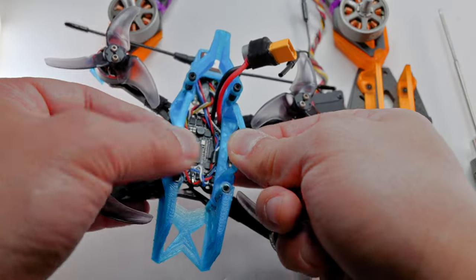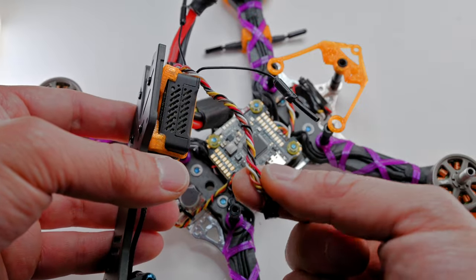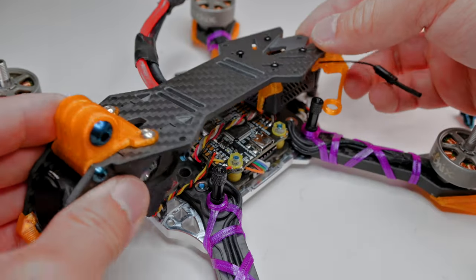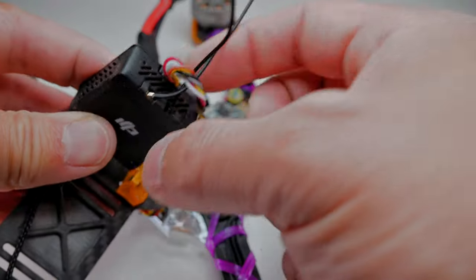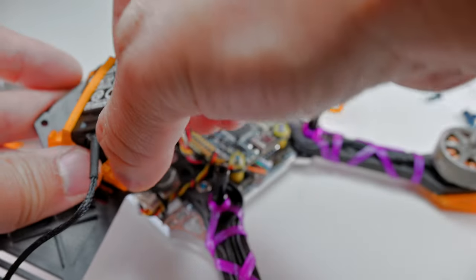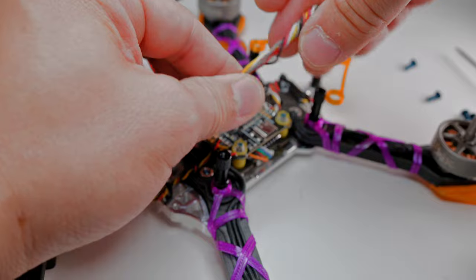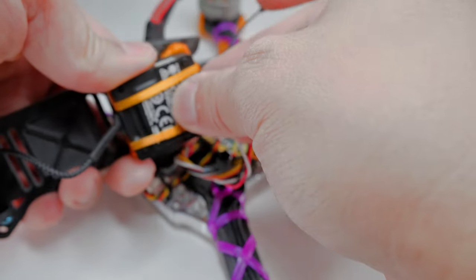So before we put on the top plate, we have to plug in the VTX into the FC. Oh crap, the wire's too short. Because of the way I put it in, the wire has to curve along the thickness. So luckily, I can just take it out of the print and just flip it upside down and put that back in. Uncoil the wire a little bit just to give it a little bit more length. And now it shouldn't be a problem. So I'm just going to plug it back in there.